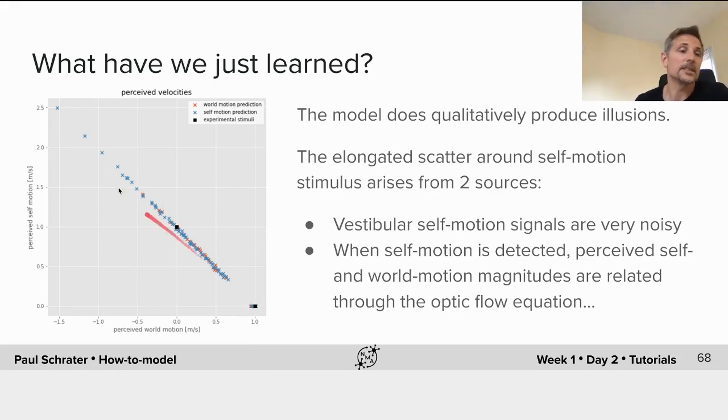Near the self motion, though, we see this very elongated scatter, which isn't exactly like what we're seeing in our participant data. This elongated scatter is arising from two sources. The vestibular motion signals are very noisy. And when the self motion is detected, that perceived self motion is algebraically integrated into the world motion magnitudes. This simple modeling trick is now doing something which doesn't exactly mirror the participants' judgments. So let's try to quantify this now and see what we can do.